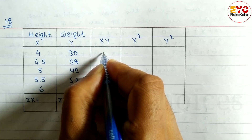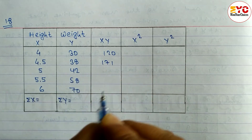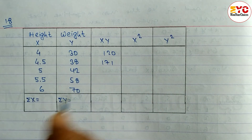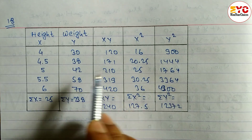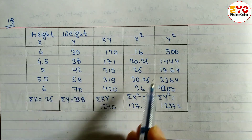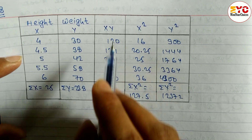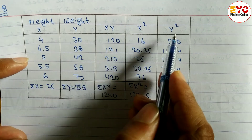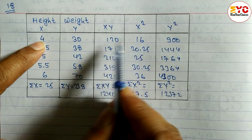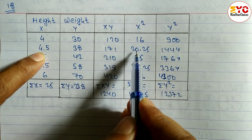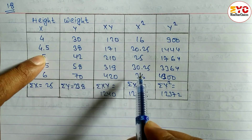Multiply to get the xy values — for example, one product is 120 and another is 171. Pause the video and multiply and check it yourself. For x squared, for example, 4.5 squared equals 20.25.